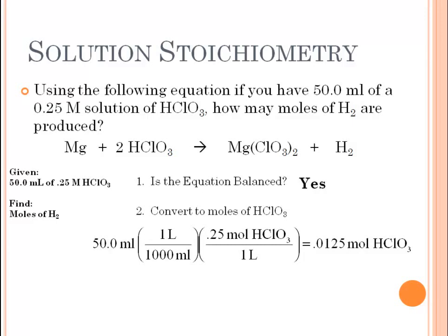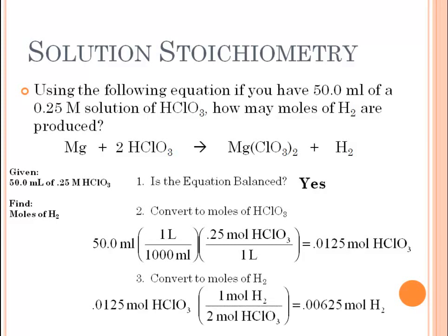Now that we know we have 0.0125 moles of chloric acid, we need to convert to the moles of hydrogen gas. To do this, we go back to our balanced equation and find the mole ratio. For every two moles of chloric acid reacted, we will produce one mole of hydrogen gas. Using that mole ratio, we calculate that 0.00625 moles of hydrogen gas were produced.